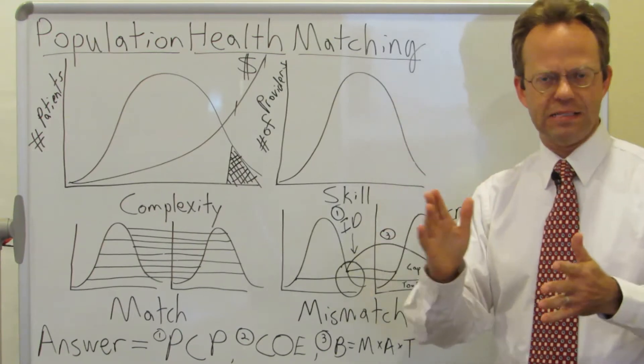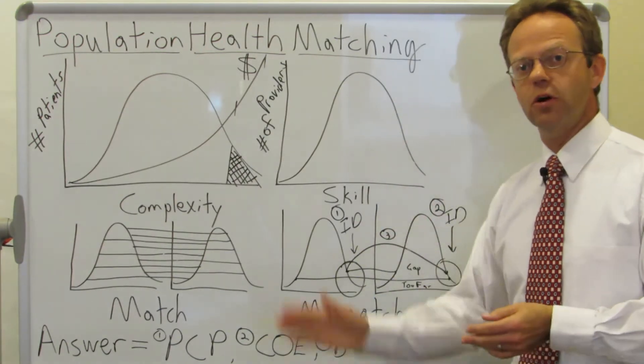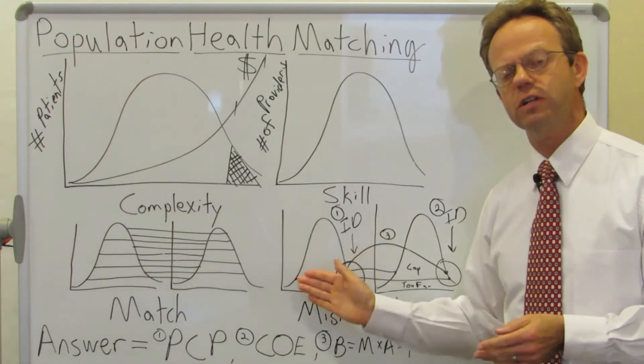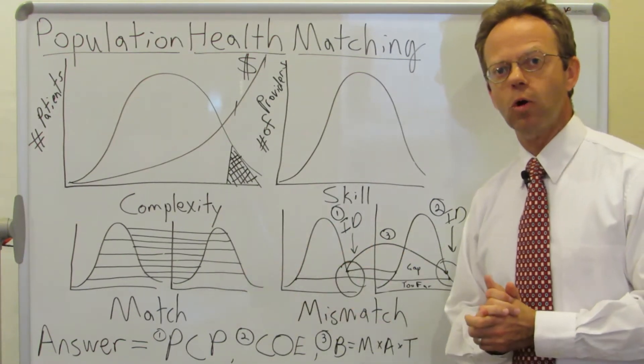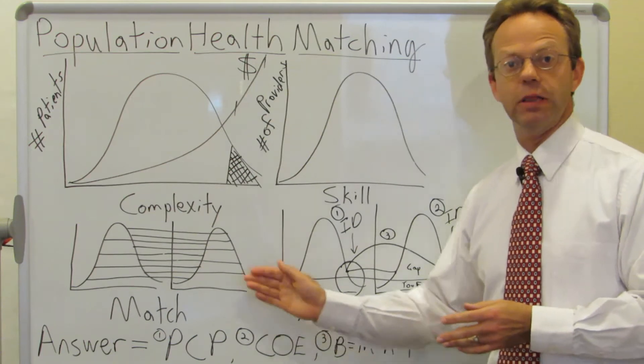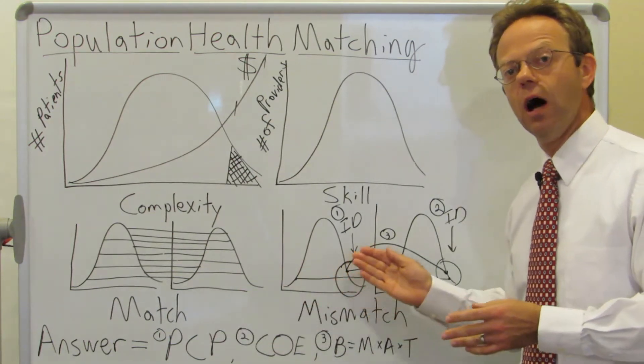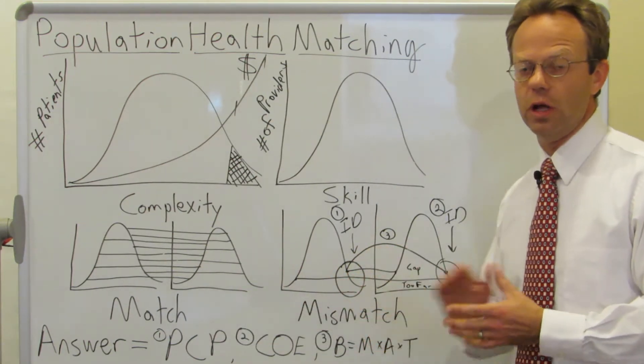Well, of course, in the real world, that is not how it happens. And so here, in this miniature version of these charts, this is more a description of what the real world is like, where we will have plan members that have very low complexity going to very highly skilled physicians.